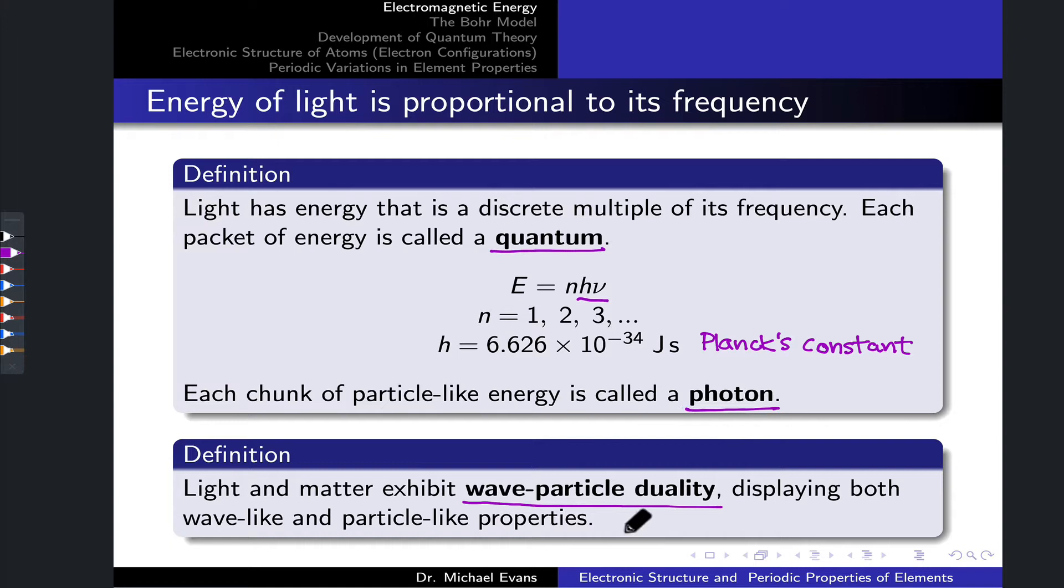Keep wave-particle duality in mind. Even systems that we would classically think of as particles can have wave-like properties in a quantum system, the electron being the classic example of this.